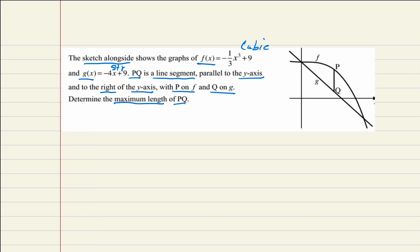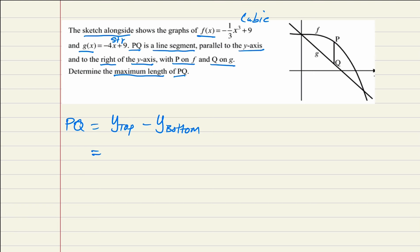Number one, we know that PQ equals y-top minus y-bottom. So this equals what is y-top? When I look at P, P is on f and f is a cubic. So we'll have -1/3 x³ + 9, minus, then we'll put this in brackets, -4x + 9.